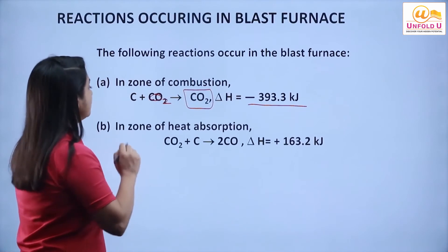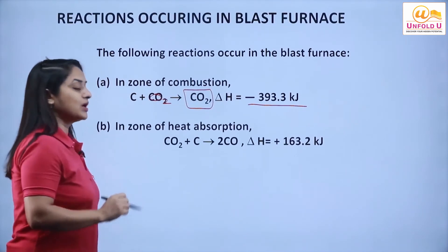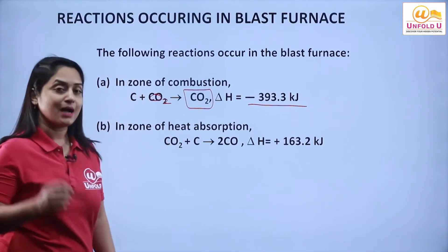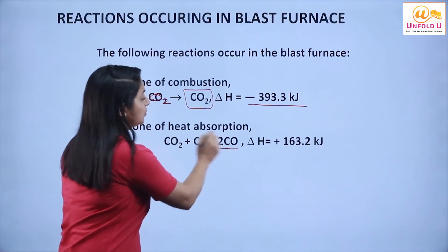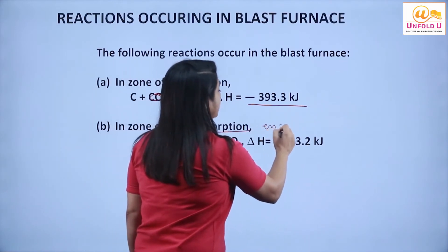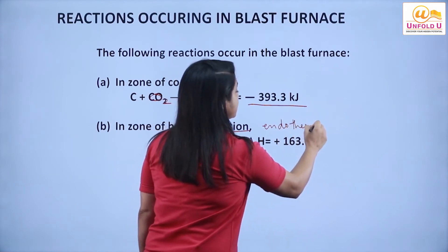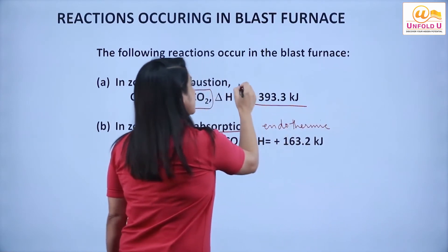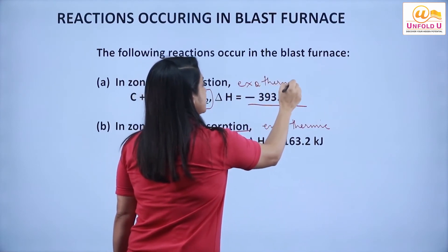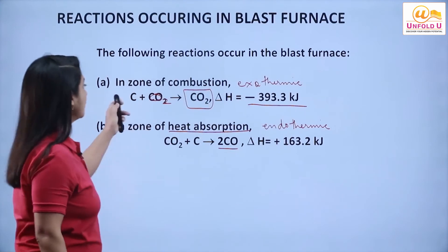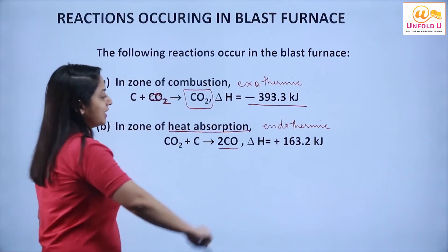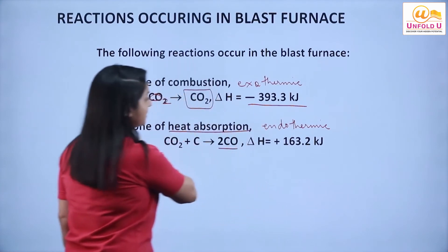In the zone of heat absorption, carbon dioxide combines with carbon to form carbon monoxide. Heat is absorbed, so this is an endothermic process. You may be asked: which process in iron extraction is exothermic — that is the zone of combustion — and which process is endothermic — that is the zone of heat absorption.